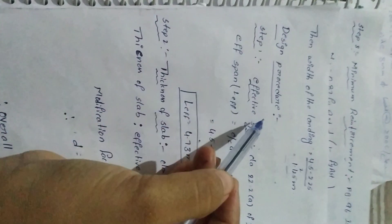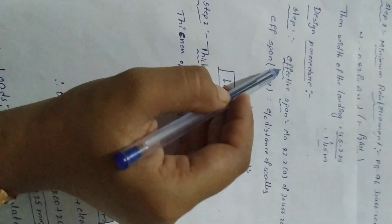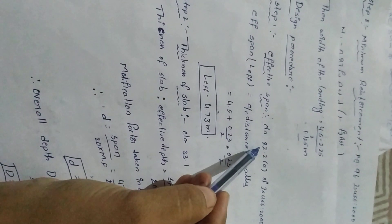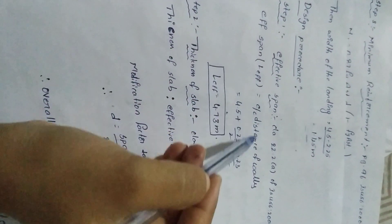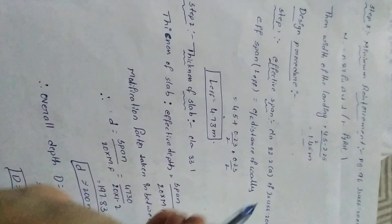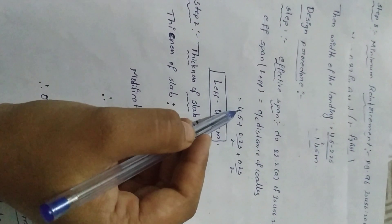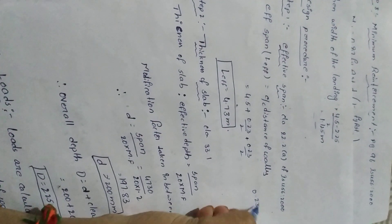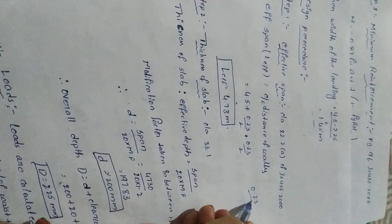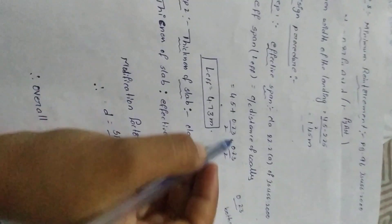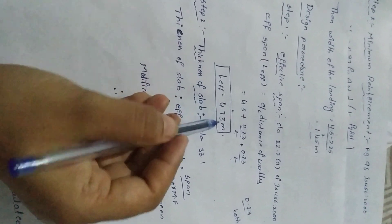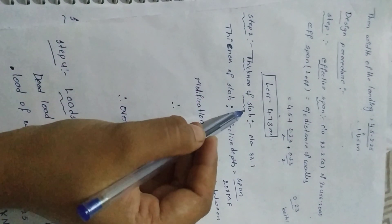Step 1: Effective span, calculated from IS 456:2000 clause 22.2a. Effective span L_eff equals center-to-center distance of the walls: total hall length 4.5 meters plus half wall width at each end (0.23/2 + 0.23/2), giving L_eff = 4.73 meters.